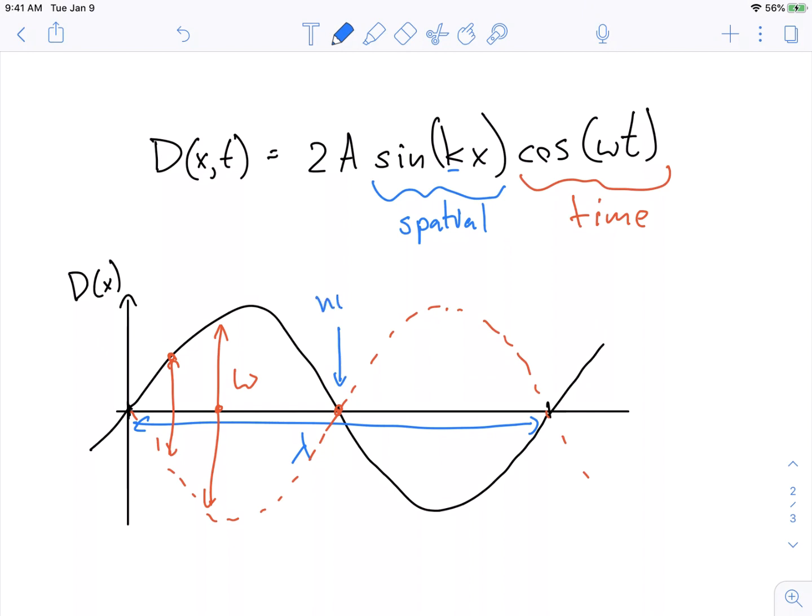And where it oscillates at its maximum, right here, this is called an antinode. So I think a really good idea would be to go and check out some of the animations on this just to see what it looks like in life moving up and down.